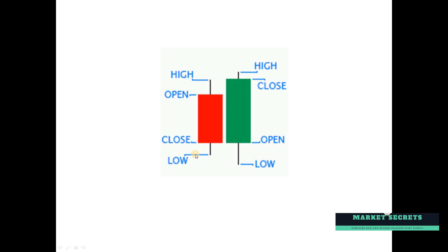This example is a proper engulfing candle because the close of the green candle closes above the open price of the red candle. There are other variations and rules for the engulfing pattern as well — for example, some say the price should close above the high of the previous candle, or the market should open below the close price of the previous day. For simple understanding, we will take just one criteria: the open price of the previous day should be less than today's closing price.